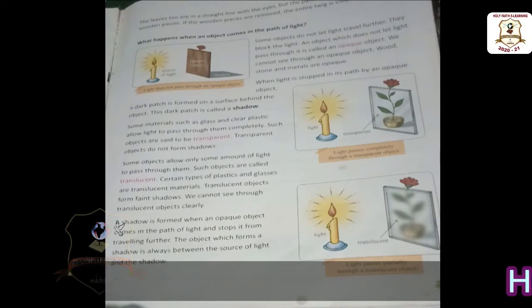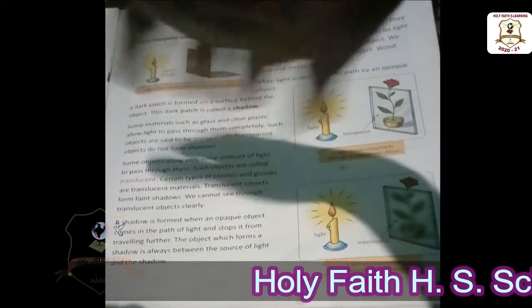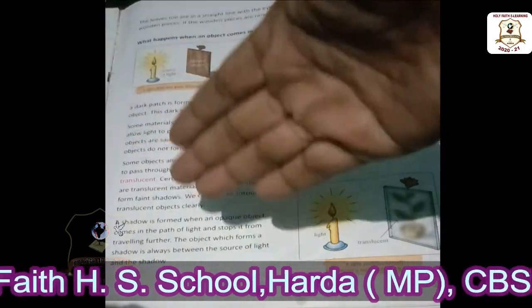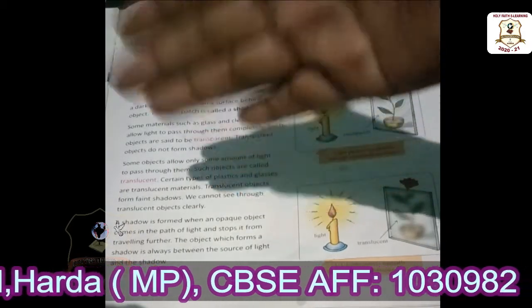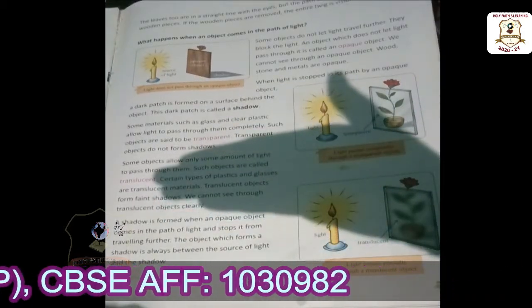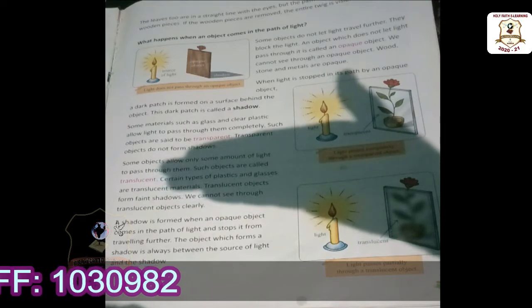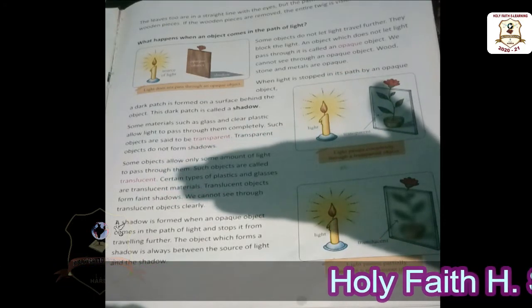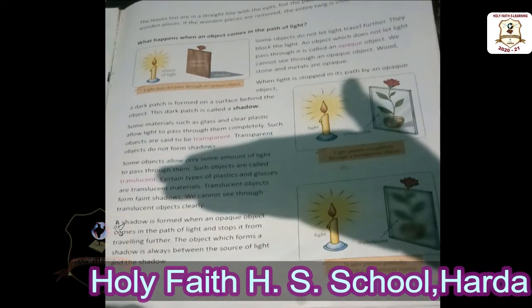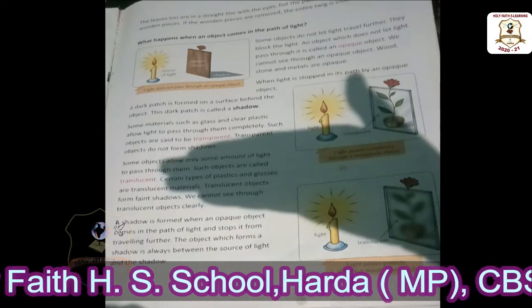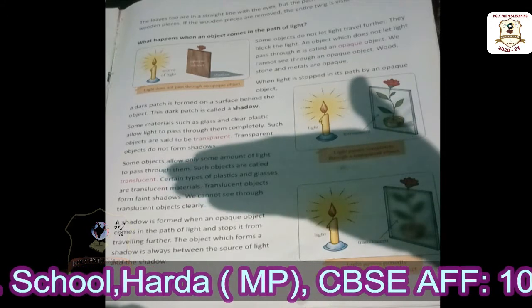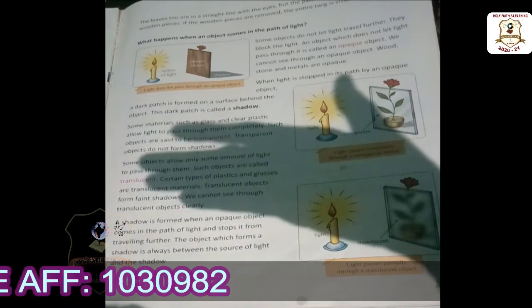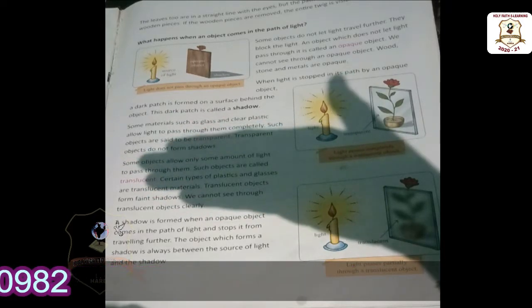Now let us learn about light and shadow. Show your hand — see, behind your hand there is a dark patch. This dark patch is called a shadow. Why do shadows happen? Shadows are made by blocking light. Our hand does not allow light to pass through it, so this is known as an opaque object.